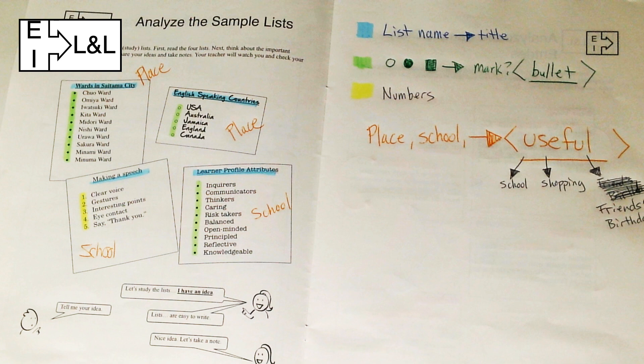Here is my worksheet. Do we get the same results? Here you can see I use the blue highlighter for the list names or titles, green highlighters for marks or bullets, and what color did I use for the numbers? Good, I used yellow. I also made a lot of notes. I used different colors and different pens to analyze my list.